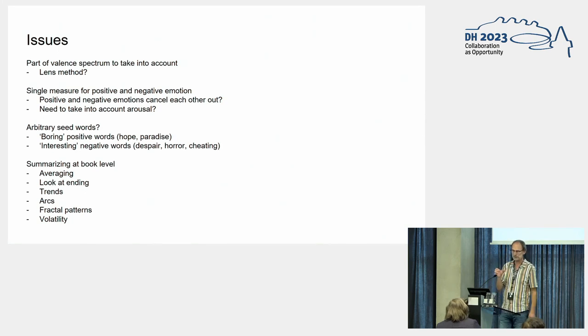Finally, there's the question of how are we going to summarize the information at book level? What we did in our first attempt was just average all values over the entire book. Well, that's maybe a naive approach and it evidently didn't work. Then the next approach might be to just look at the ending, because that is what people probably will respond to. A positive ending and a negative ending is obviously important for a book. We could look at trends—is there a positive or negative effect? We could look at arcs. Of course, there's been quite a lot of work on the emotional arcs that novels may have.